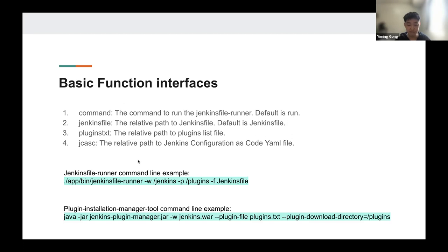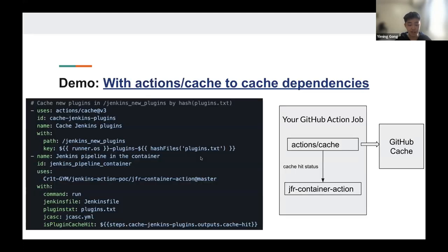As some people might not be familiar with the tools in our actions, I listed some basic commands about them. We use the plugin installation manager to install the plugins specified by the plugin installation list file, and the Jenkins file runner to run the Jenkins pipeline. After these explanations about the actions, I want to share some demos so you can apply them in your GitHub workflow definitions. I've already added some hyperlinks so you can click them.